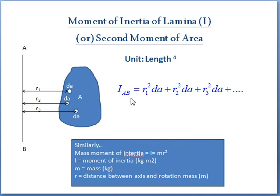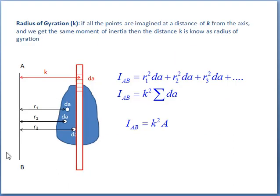Let us further simplify this moment of inertia. Imagine this lamina has n number of elemental areas which are at a distance of k from the reference axis. So, all the elemental areas, if we arrange at the same distance of k from the reference axis, if we get the same moment of inertia, then that k value is known as radius of gyration.